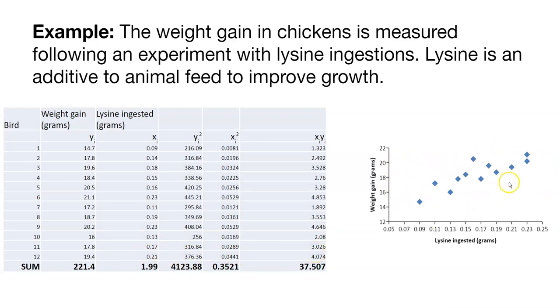You can begin to see, even by just looking at this data at the start, we can probably draw a line that has a positive slope through these data. As chickens ingest more lysine, they tend to gain more weight. A nice example here that we'll work through to learn more about how we can apply the concepts of regression.